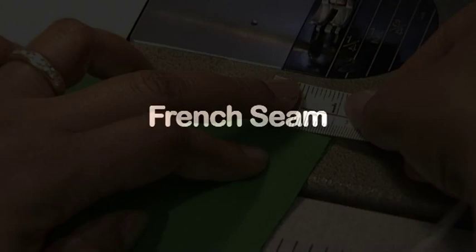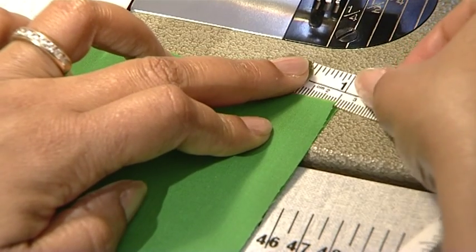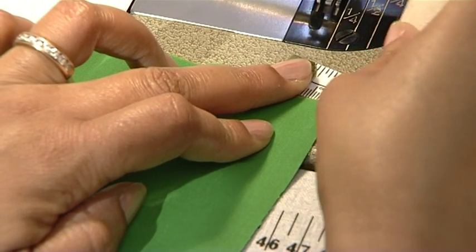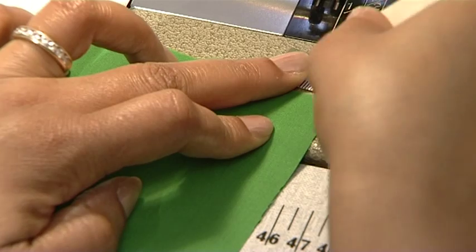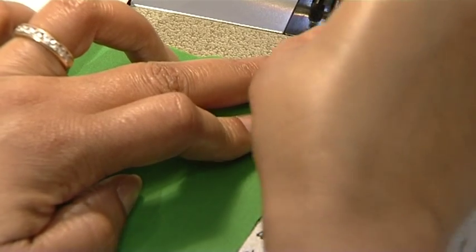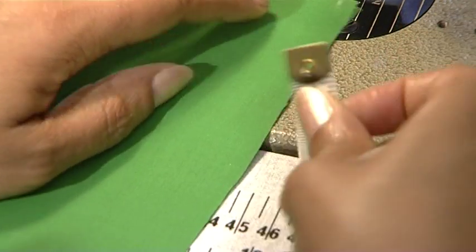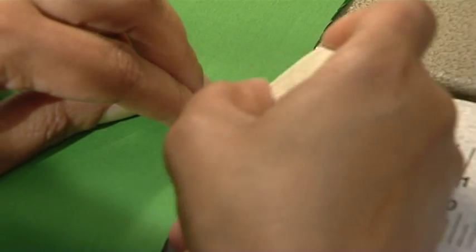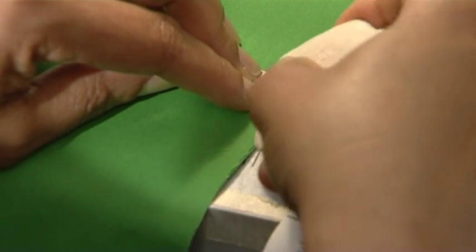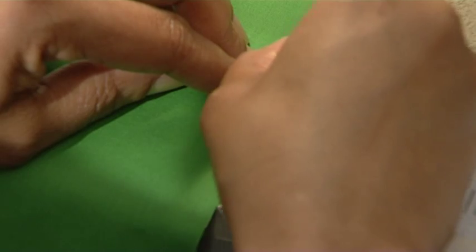A French seam using a 1.5 centimeter seam allowance. First measure off six millimeter seam allowance and place the wrong sides of the fabric together.